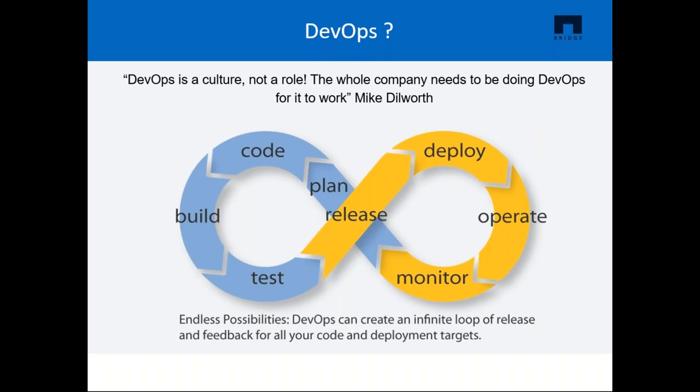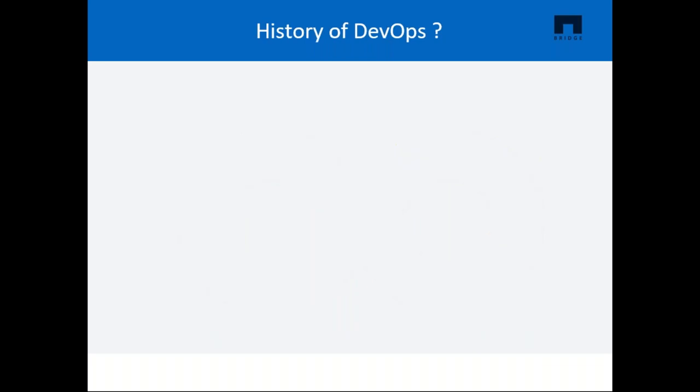According to DevOps culture — you may have seen this logo whenever you search DevOps on Google — a single group of engineers, whether developers, system admins, or QA, now turn into DevOps engineers. They have end-to-end responsibility of the application: from gathering requirements, to development, testing, infrastructure deployment, application deployment, monitoring, and gathering feedback from end users. Then implementing changes again — the process goes on. The infinity symbol in the DevOps logo makes perfect sense: DevOps creates an infinite loop of releases and feedback for all your code and deployment targets.